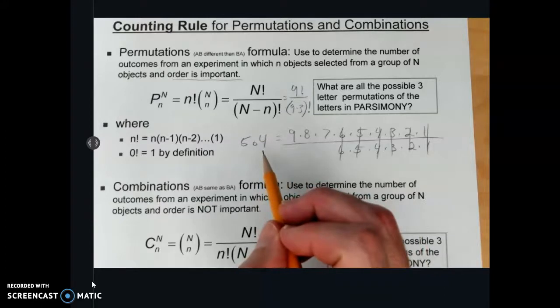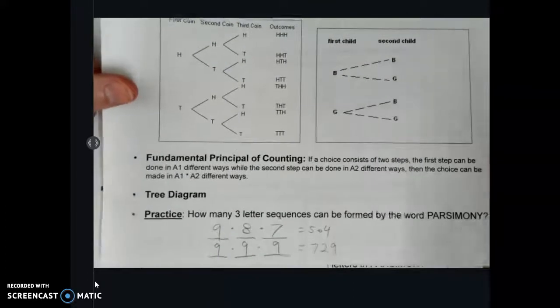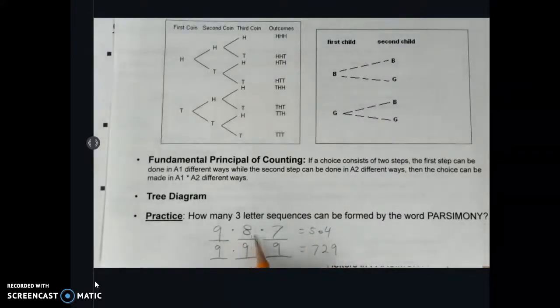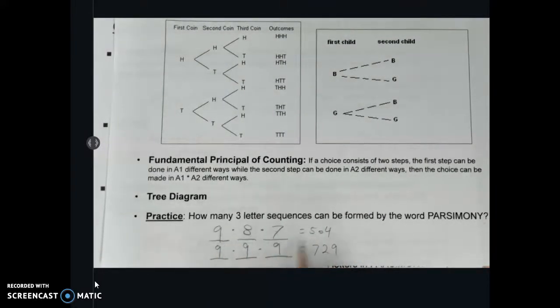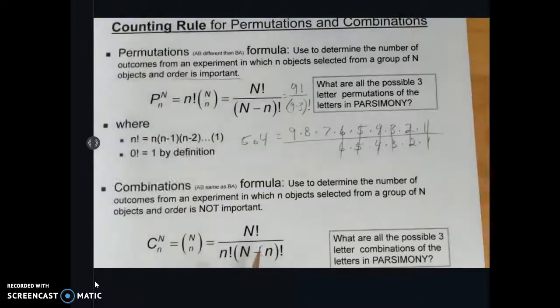Now, that may look familiar, because if you go back to the prior slide that we did here, when we took 9 times 8 times 7, and we're filling in the slots, we got 504. So we actually did the permutations using our tree diagram and the fundamental principle of counting to kind of convey that idea.